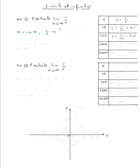If x is one thousand, the y value will be 0.001. If x is ten thousand, y equals one over ten thousand, which is 0.0001. So you can see the values of y are getting closer and closer to zero. We know that one over x is approaching zero. So the limit of one over x as x approaches infinity is equal to zero.